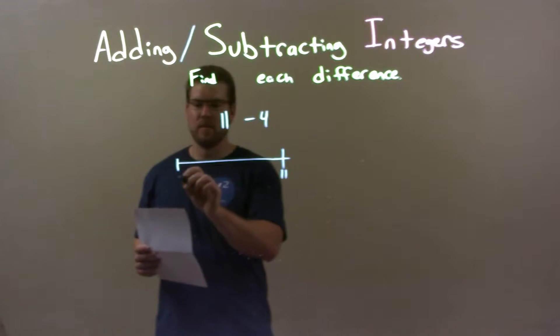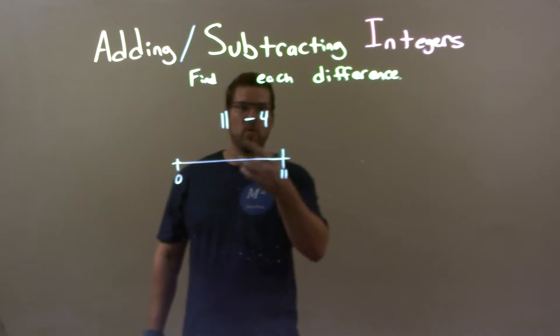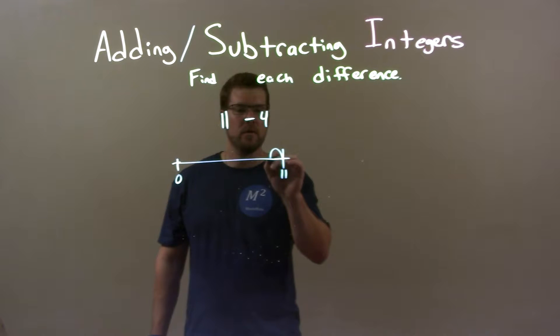So 0 is over here. 11 we subtract 4 units. Well I know if I subtract 1 unit I get to 10, so we subtract 1.